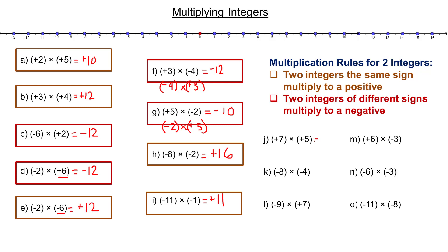Positive 7 times positive 5: 7 times 5 is 35, and they're both positive, so that's positive 35. In k, negative 8 times negative 4: 8 times 4 is 32, and since they're both negative — that's the first rule — two negatives multiply to a positive, so positive 32. Negative 9 times 7: 9 times 7 is 63, and we have one negative and one positive — the second rule applies — so it's negative 63.